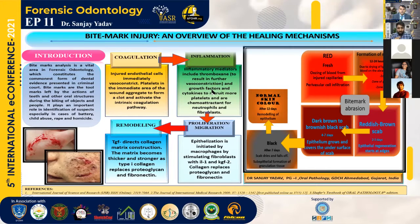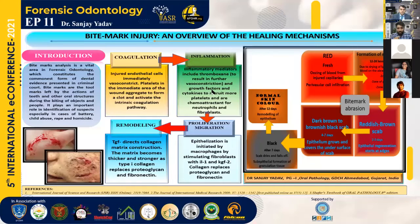Initially, when red blood cells infiltrate, the color is red. After that, due to lack of oxygen and pigmentation from hemoglobin or liberated iron, the color changes. After 12 to 24 hours it becomes slightly darker. After 2 to 3 days, when epithelium regeneration starts, it becomes red-brown. At 4 to 7 days, when the epithelium grows more and granulation tissue formation begins, it becomes brownish. After 7 to 12 days, it becomes black, and after 12 days the normal skin structure is recovered.